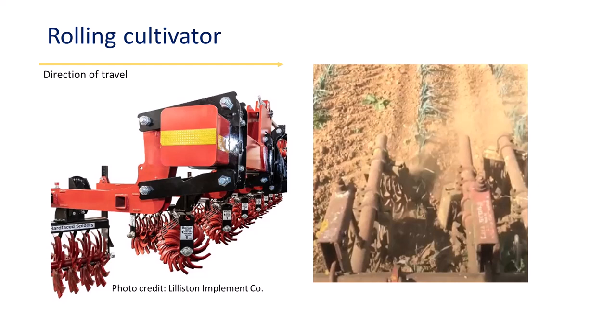Rolling cultivators till the soil with gangs of spiders. They are most effective in clean-tilled fields or with little residue. The spider gangs adjust to move soil toward or away from the row, work well with other weeding tools, and will tilt to match the size of raised beds or for building ridges. Rolling cultivators run close to the crop and work well in crops up to 25 centimeters tall.